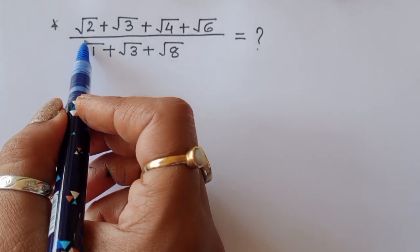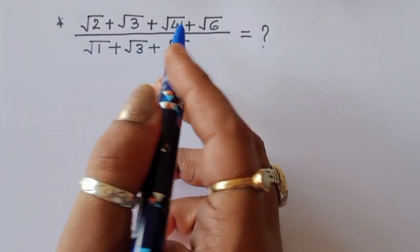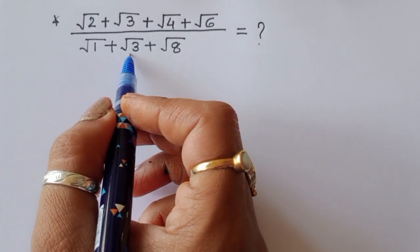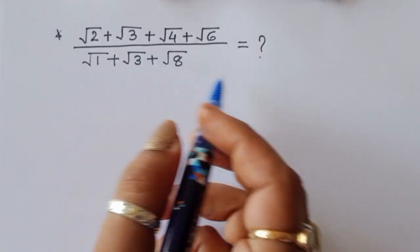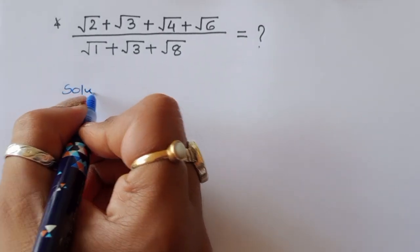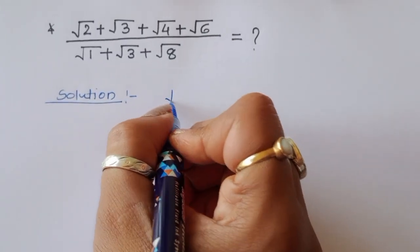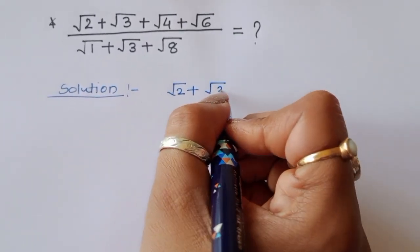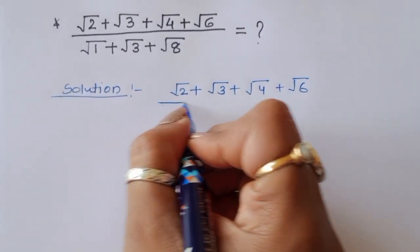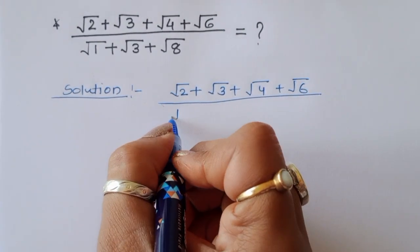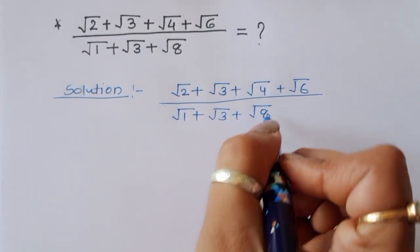The question is given: square root of 2 plus square root of 3 plus square root of 4 plus square root of 6, divided by square root of 1 plus square root of 3 plus square root of 8. We have to find out the value of this expression. Let's see the solution.